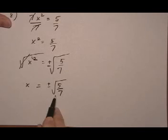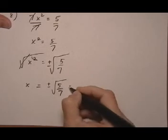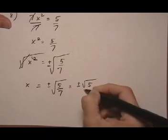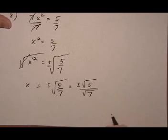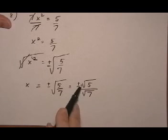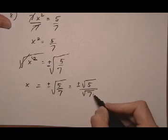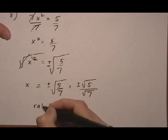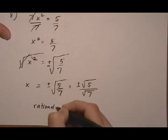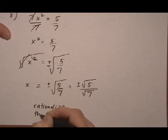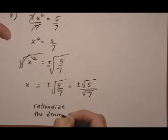Because this thing right here is the same as plus or minus root 5 over root 7. Because we can give that root to the numerator and denominator separately. We don't want to have a square root in a denominator. So what we're going to do is something called rationalize the denominator.